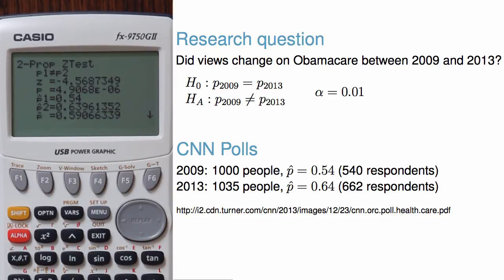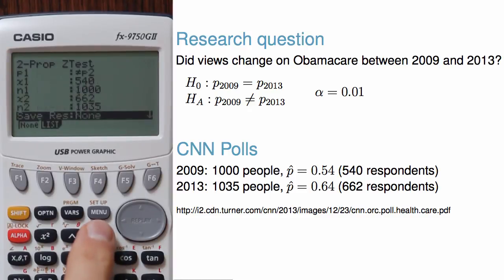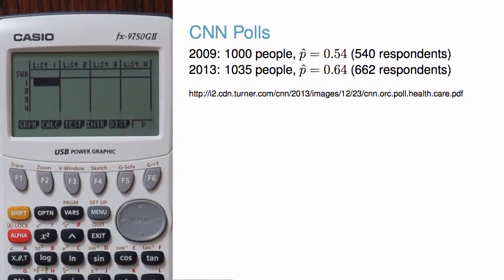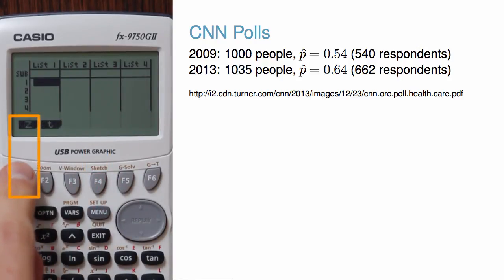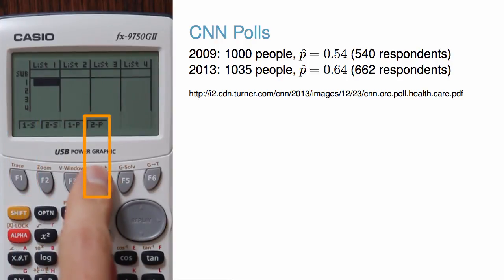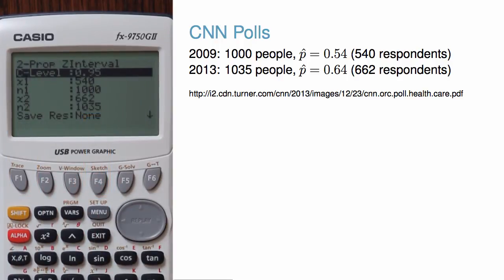When I am done, I can exit out of the main stat page. We can also construct a confidence interval for the increase in the fraction of adults who believe Obamacare will increase their healthcare costs. Go to Enter for confidence interval, choose F1 for Z, then choose 2P for two proportions. We'll use a 99% confidence level, so we'll enter 0.99 for the confidence level.